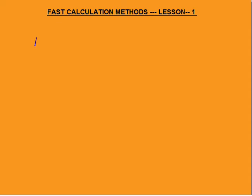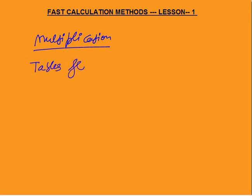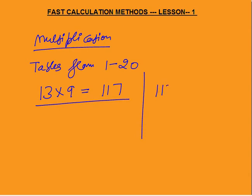The next thing after addition is multiplication — how to multiply numbers. The first thing to learn in multiplication is tables. You must know tables from 1 to 20, and you have to learn them both ways. For example, 13 times 9 is 117, and when 117 appears you must be able to recognize it as 13 times 9. This is very important.